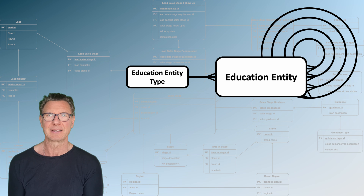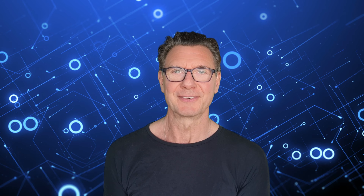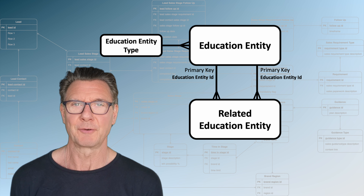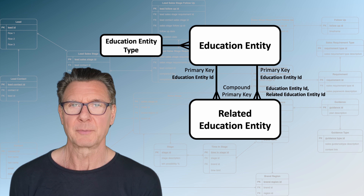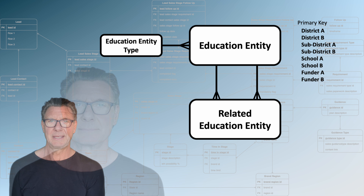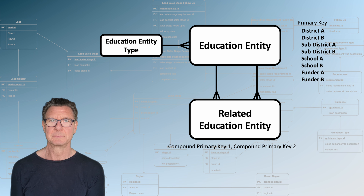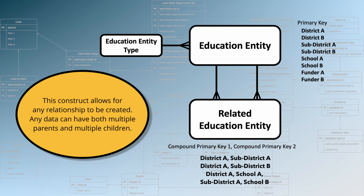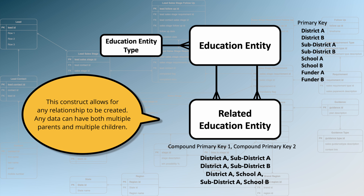So the question is, how do we solve it? We need a new kind of data structure — a multi-dimensional data structure. We create a new entity called Related Education Entity, and we create two relationships between the two entities. The primary keys of the Education Entity become a compound primary key for the Related Education Entity. For example, we can set up District A as a parent of both Sub-District A, Sub-District B, and School A. We can set up Sub-District A as a parent of School B, and Funder A as a parent of both Sub-District A and School A. As you can see, any relationship can be defined in the Related Education Entity.